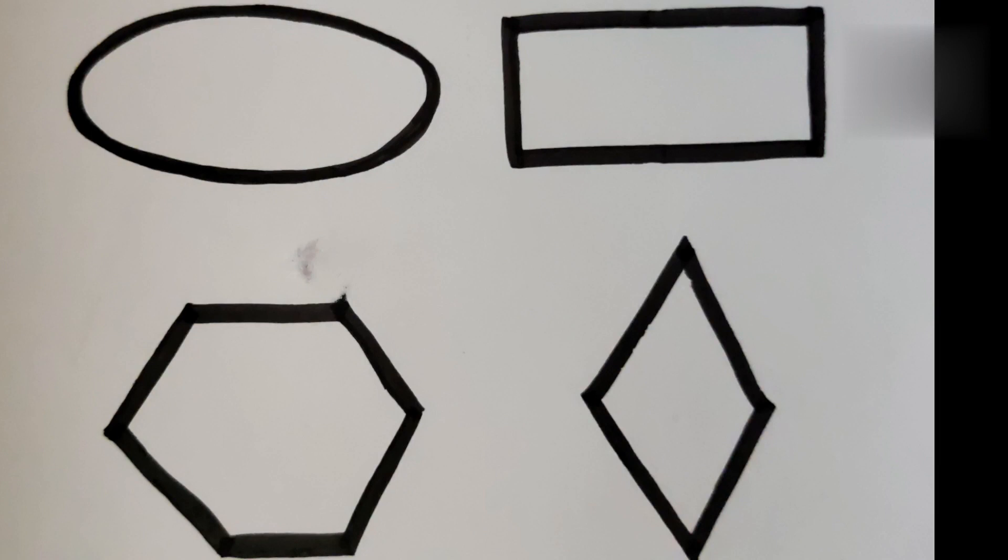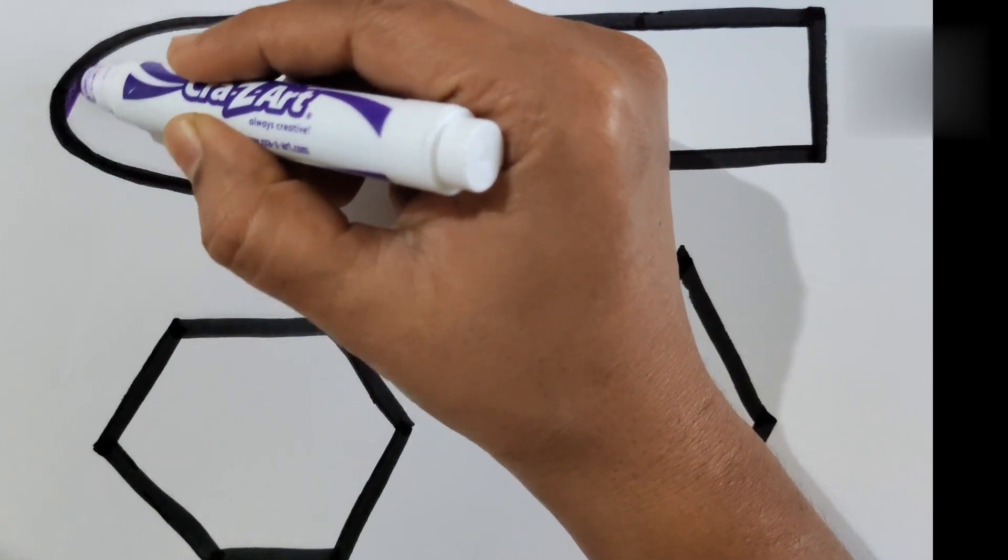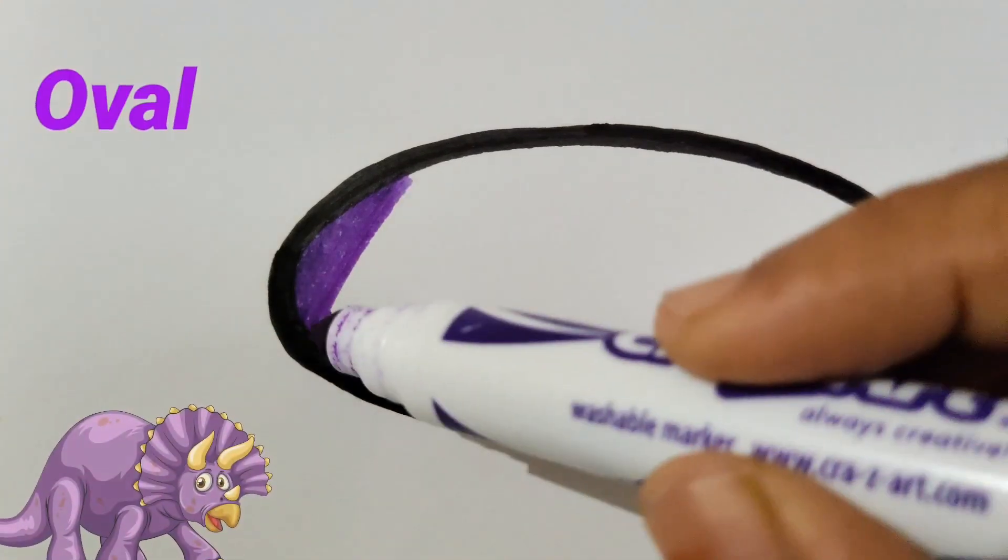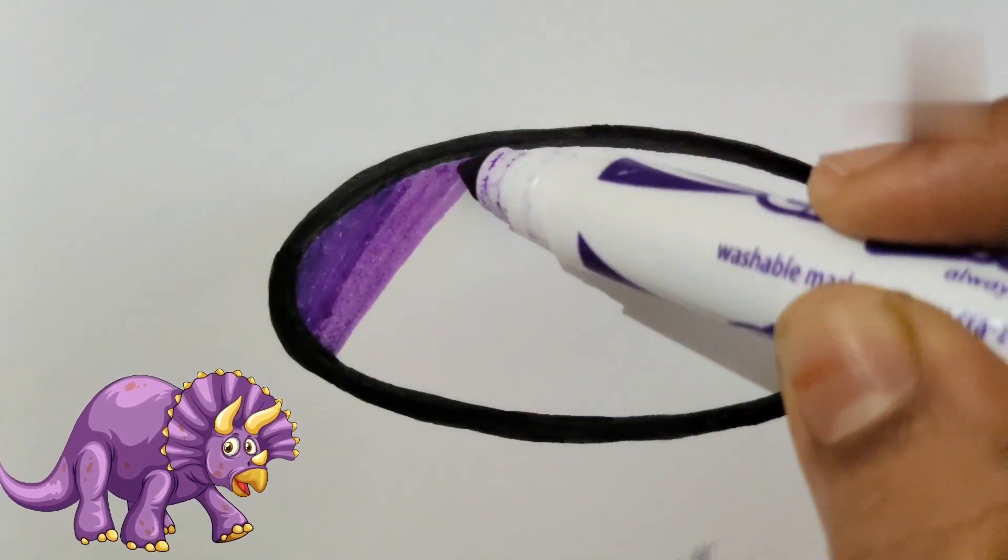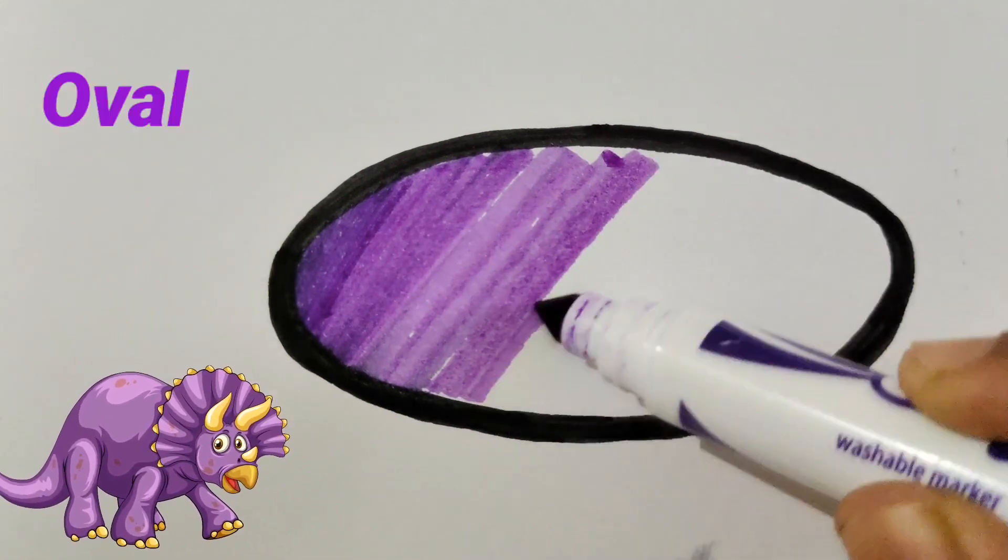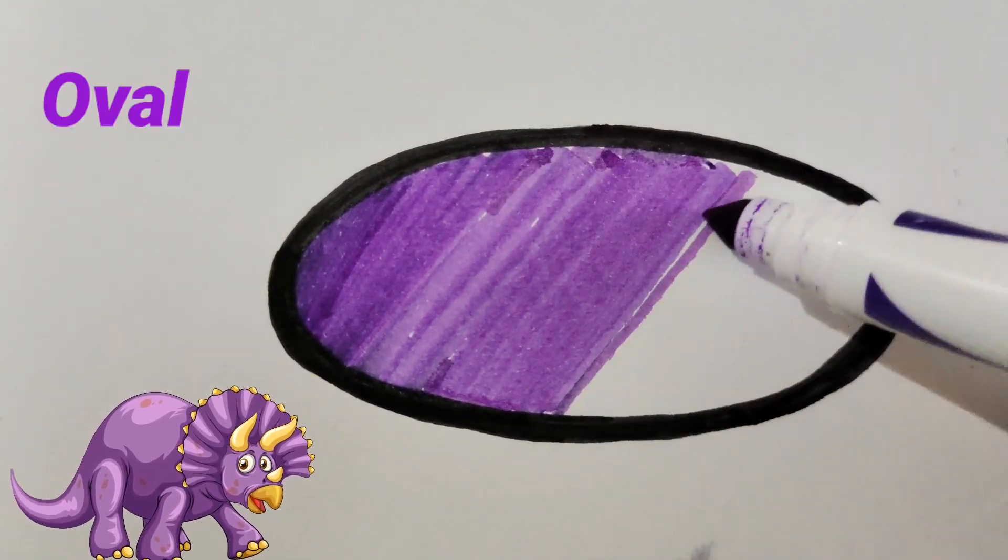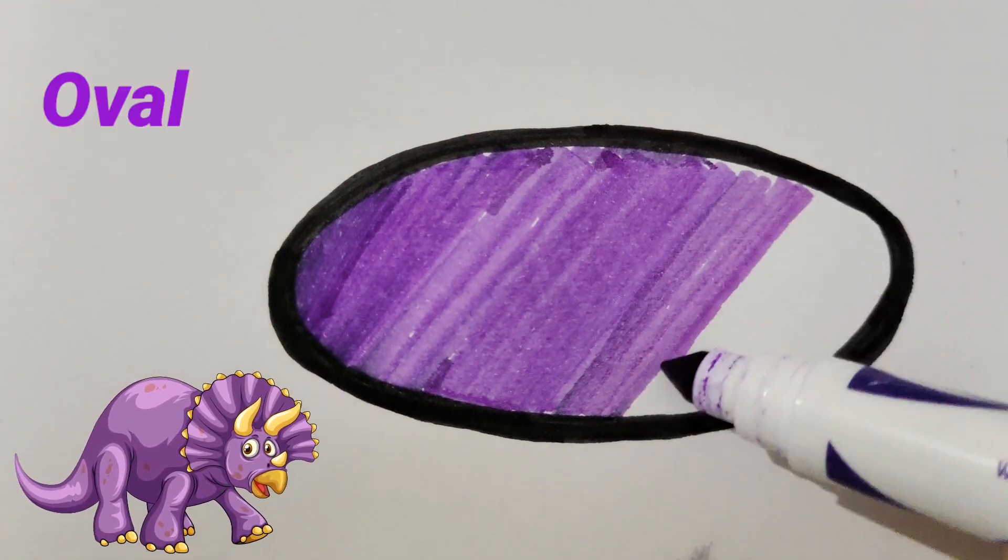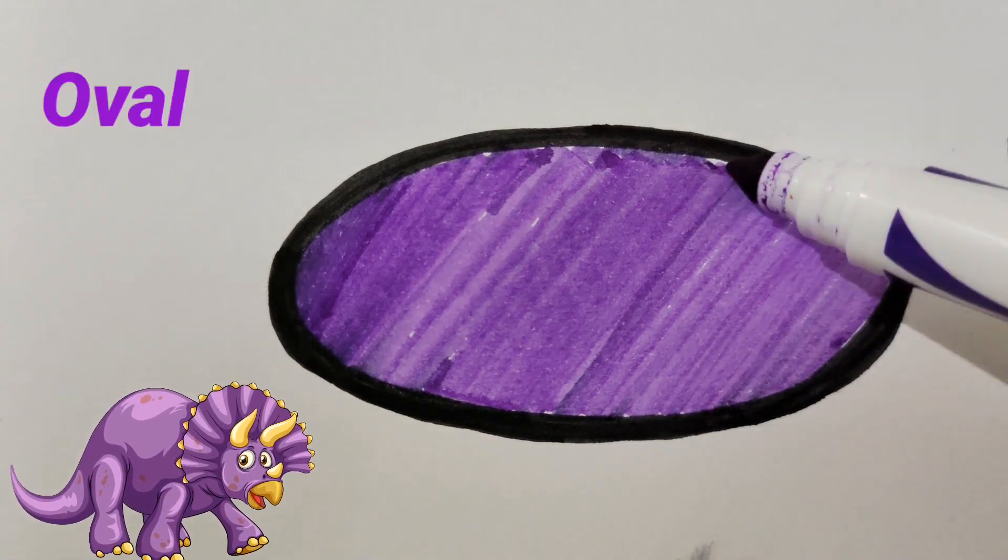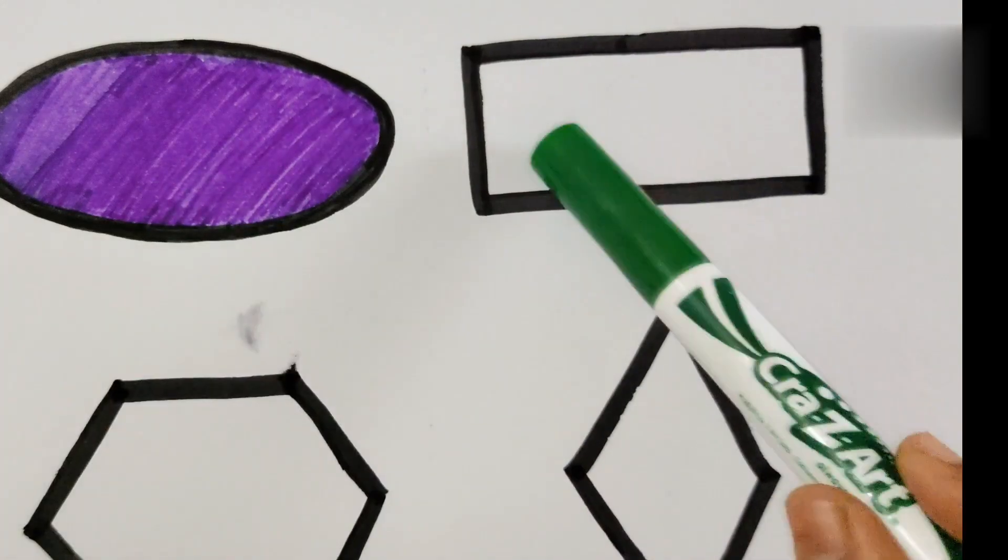Let's color oval with purple color. Wow, this is oval shape and we will fill purple color in the oval shape. Yes, I have a purple color dinosaur which is looking at oval shape. This is looking amazing. My oval shape is ready. Oval is purple in color now.